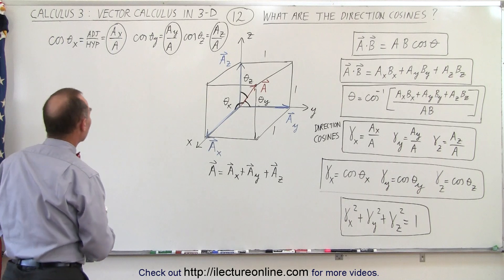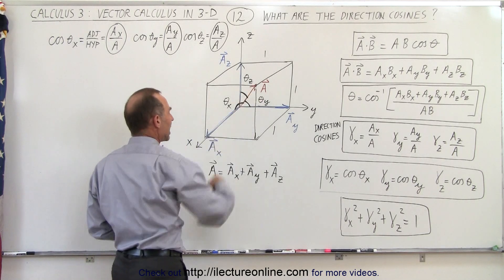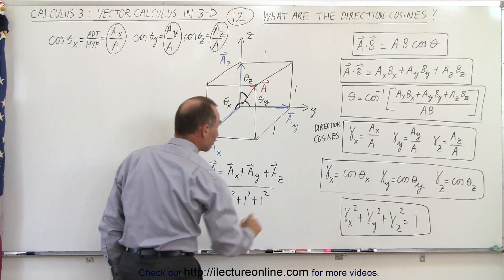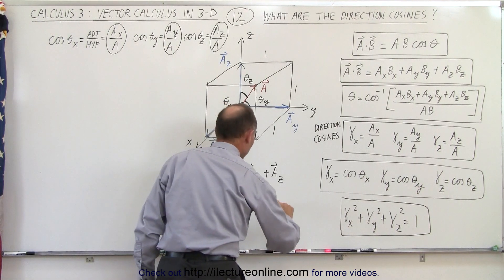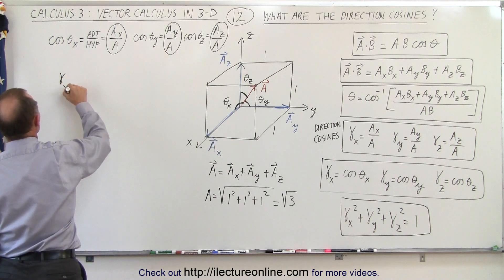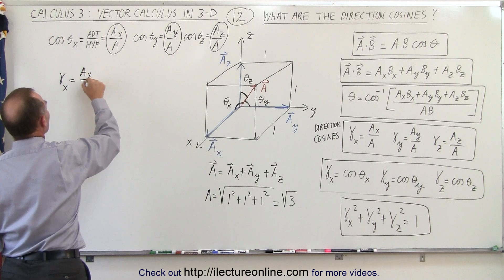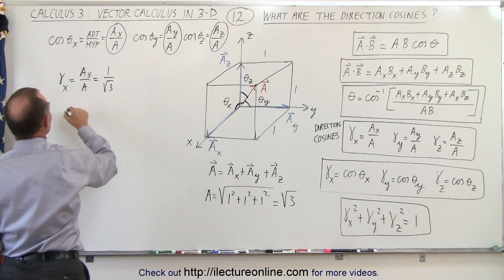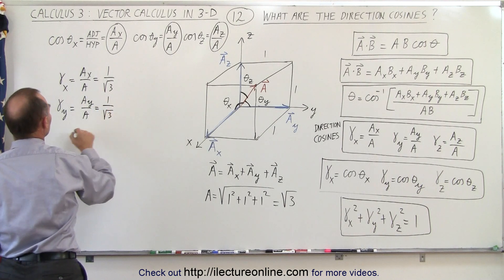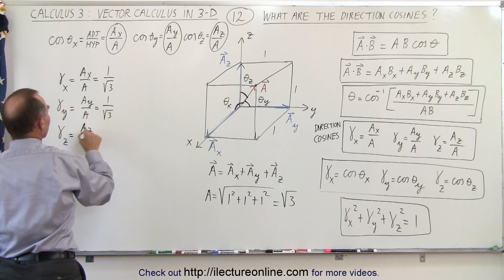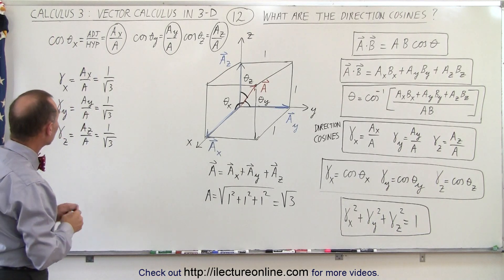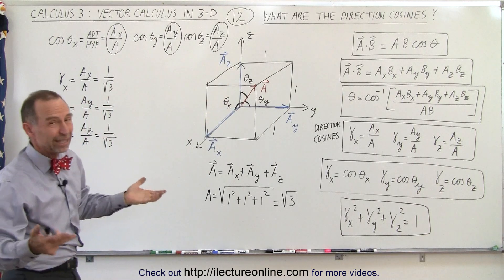Let's find the direction cosines for this case. The magnitude of vector a equals the square root of the x component squared plus the y component squared plus the z component squared. Since all components equal one, this gives the square root of three. Therefore, the direction cosine for x is 1 over root 3, for y is 1 over root 3, and for z is 1 over root 3.